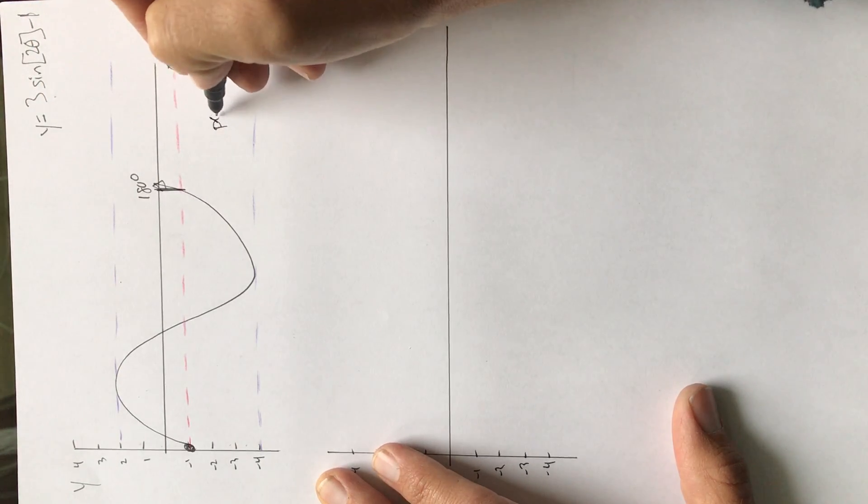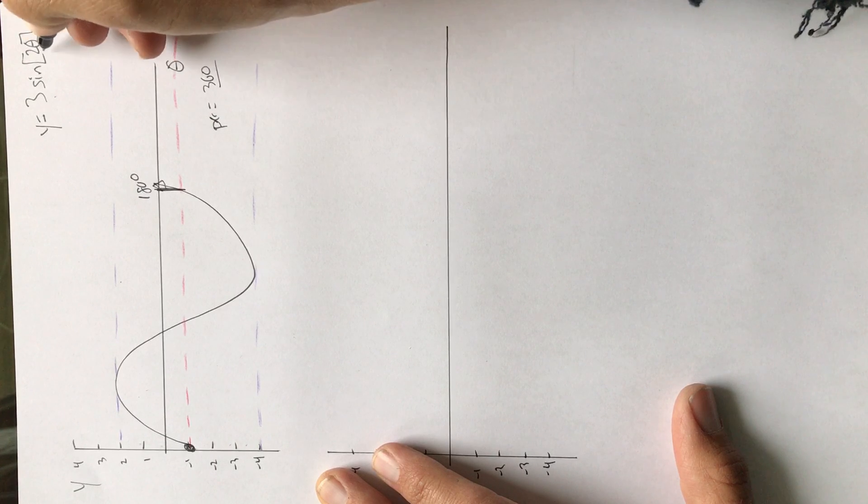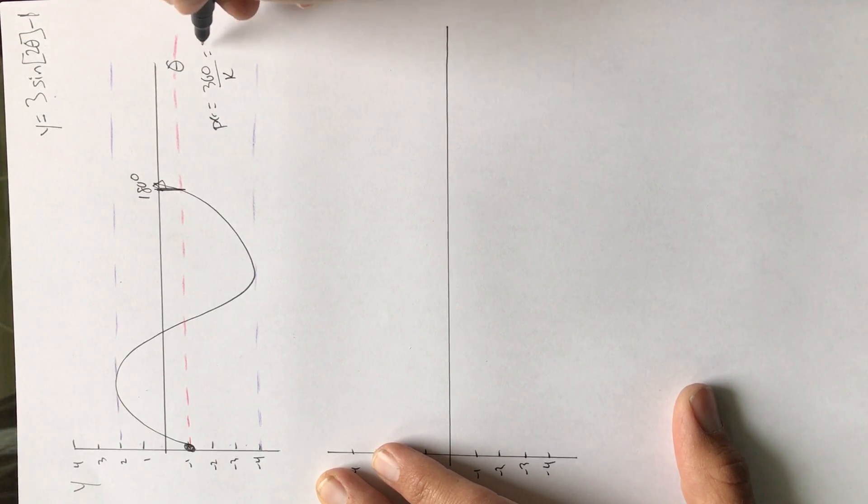Don't forget, we can get the period by doing our 360 divided by k, which is two. Okay, so 360 divided by two, which is also 180.